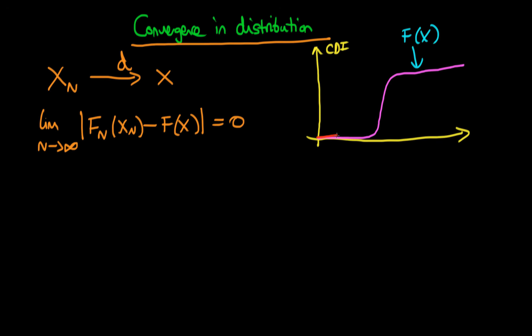Whereas the red line here might represent the distribution, or the CDF rather, of our variable Xn if let's say n is equal to a thousand. But what we will have as n increases is we will have a convergence between these two. So the red line will approach the purple line, and then in the limit that n tends to infinity, if they are both actually of the same line, then we say that Xn converges in distribution to X.